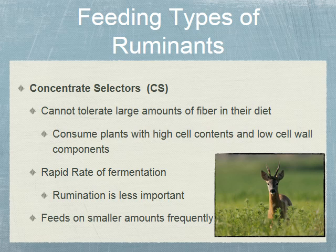The first feeding type of ruminants are the concentrate selectors. These animals can't tolerate large amounts of fiber in their diet. They consume plants with high cell contents and low cell wall components. They also have a very rapid rate of fermentation, meaning they eat small quantities of food and pass it through their rumen quickly. Rumination is less important for these animals. They feed on smaller amounts frequently. Examples of concentrate selectors are white-tailed deer, roe deer, and moose, which feed primarily on forbs and shrubs throughout the year.